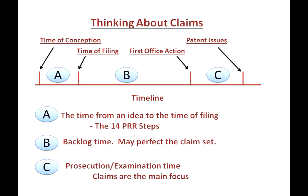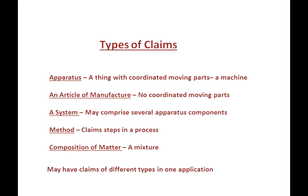The exercise of developing a claim set with your application will be very valuable as you go on. Here are the most common types of claims you may prepare to file depending on the nature of your invention. There are apparatus claims — an apparatus is a thing with coordinating moving parts, a machine. You can write an article of manufacture claim, which has parts but not coordinating moving parts. You can write a system claim, which may comprise several apparatus components. A method claim claims steps in a process. A composition of matter claim claims composition of various components in a mixture. And you may have claims of different types in one application.